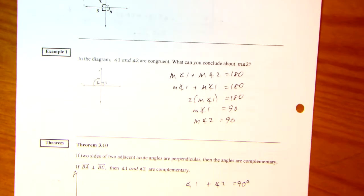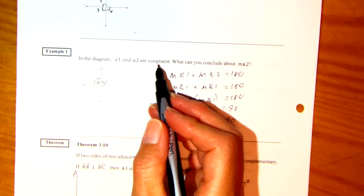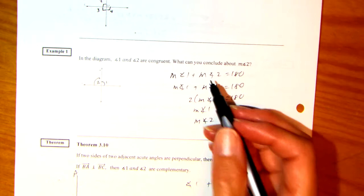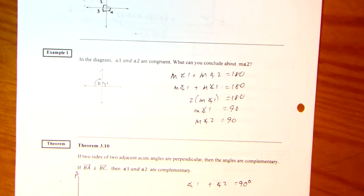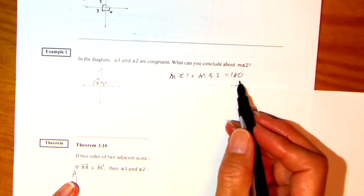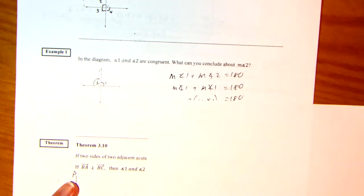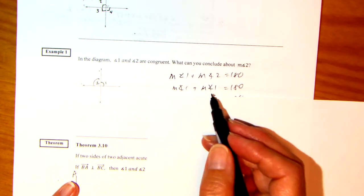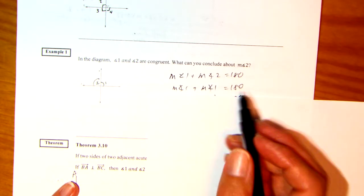Example 1. Like I told you that last theorem, 3.8, is just like example 1. If angle 1 and angle 2 are congruent, what can you conclude about measure of angle 2? Well, let's kind of cover that up again. Measure of angle 1 plus measure of angle 2 is 180. Well, I know that these are congruent, so I'm going to substitute in. Substitute measure of angle 1 for measure of angle 2. They're congruent. They have equal measures. That's equal to 180.